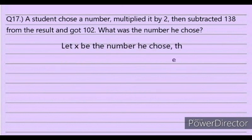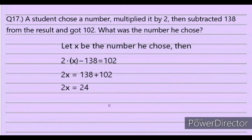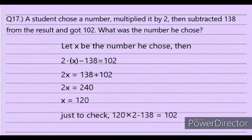Solution: Let X be the number chosen. Then 2X minus 138 equals 102. So 2X equals 138 plus 102, giving 2X equals 240, and X equals 120. Check: 120 times 2 minus 138 equals 102. The answer is not among choices A–D as stated; the solved value is 120.